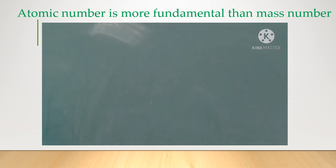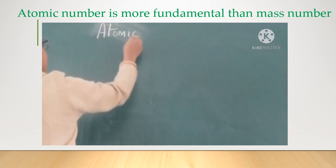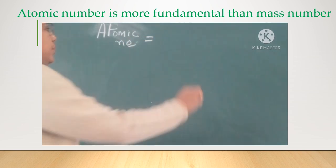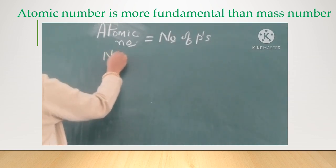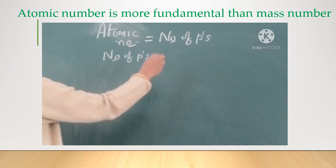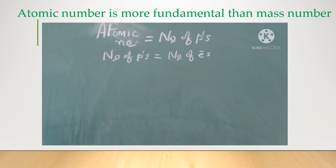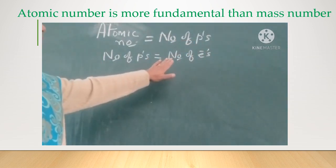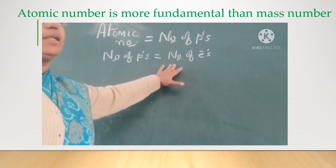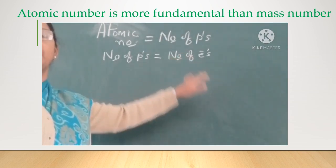The second reason why atomic number is more fundamental than the mass number: the atomic number of an atom is equal to the number of protons. The number of protons is equal to the number of electrons, because atoms are electrically neutral. It is through the electrons that we can write the electronic configuration — which is the distribution of electrons in various shells or orbits — and from which we can get the valence electrons.